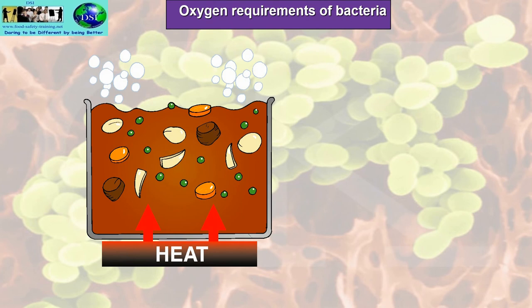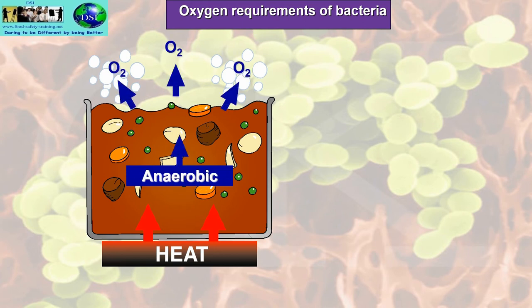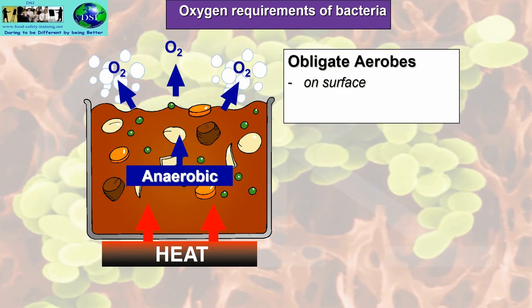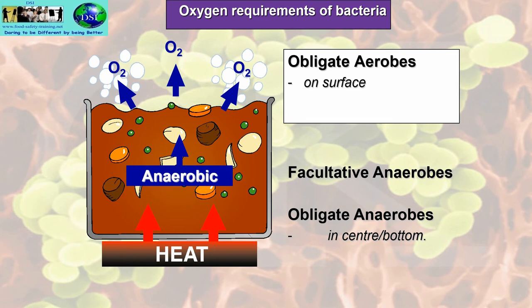Let's look at the oxygen requirements of bacteria. Anaerobic bacteria will happily survive without oxygen — you'll see them in liquid where there's no oxygen. Obligate aerobes are found on the surface of food and must have oxygen to survive. Facultative anaerobes can live with or without oxygen. Obligate anaerobes must not have any oxygen — the bacteria that spring to mind are Clostridia: Clostridium perfringens and Clostridium botulinum — they are obligate anaerobes.